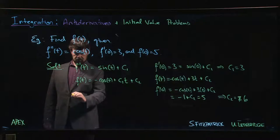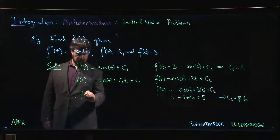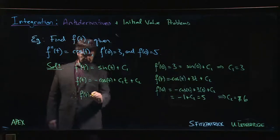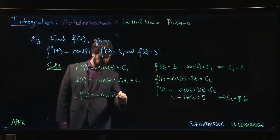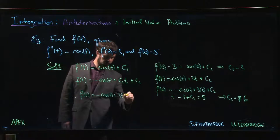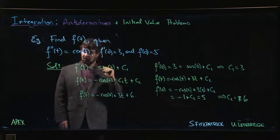So that means that we can completely describe our function. f of t is negative cosine t plus three t plus six, and then you have it.